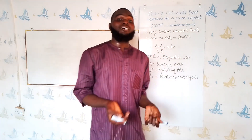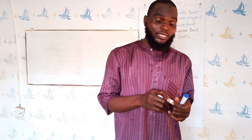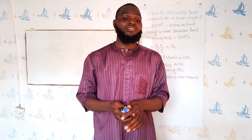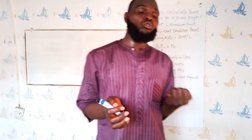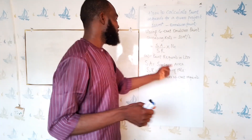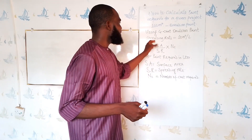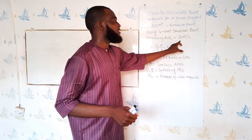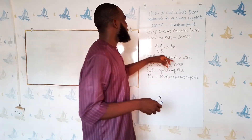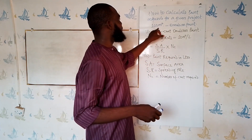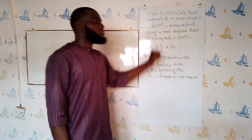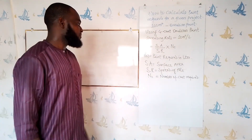NC means number of coats required. Sometimes a specification will state that you are painting three times; sometimes it is just one coat — that must be noted. Now let's calculate the amount of litres required to cover 100 square meters using fine coat emulsion paint.